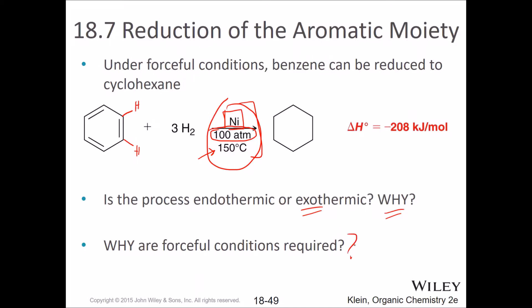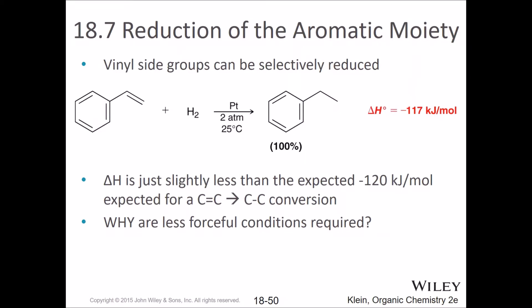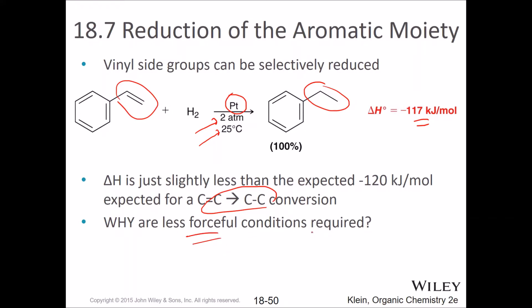The vinyl side groups — this is called vinyl — can be selectively reduced if we use platinum at much lower pressure, just double what you have in your lungs, and at room temperature. So if you have a vinyl side group, you can reduce that, and it's also exothermic — slightly less than the expected 120 kilojoules per mole. Why are less forceful conditions required? This relates to the aromaticity questions from the previous slide.